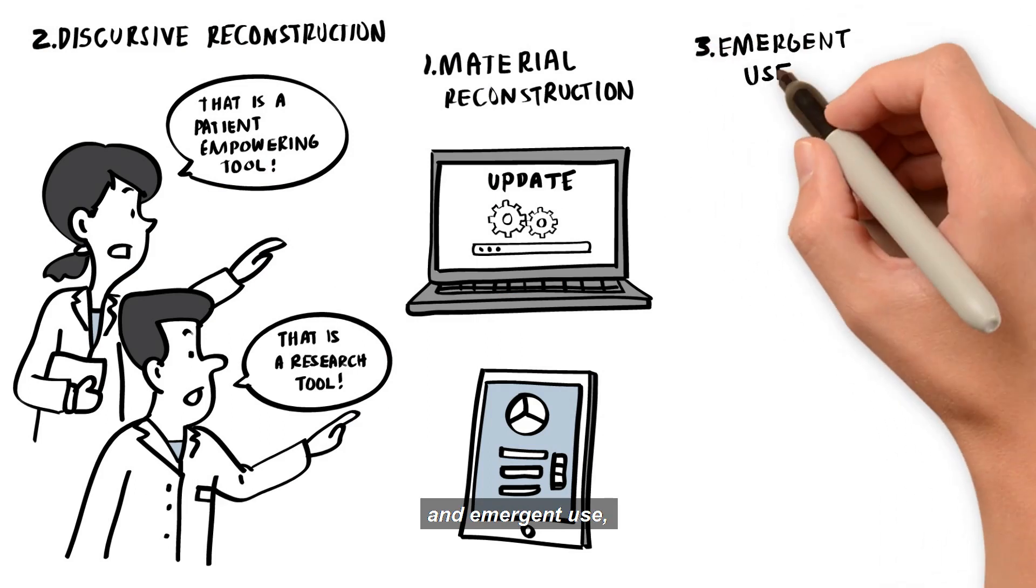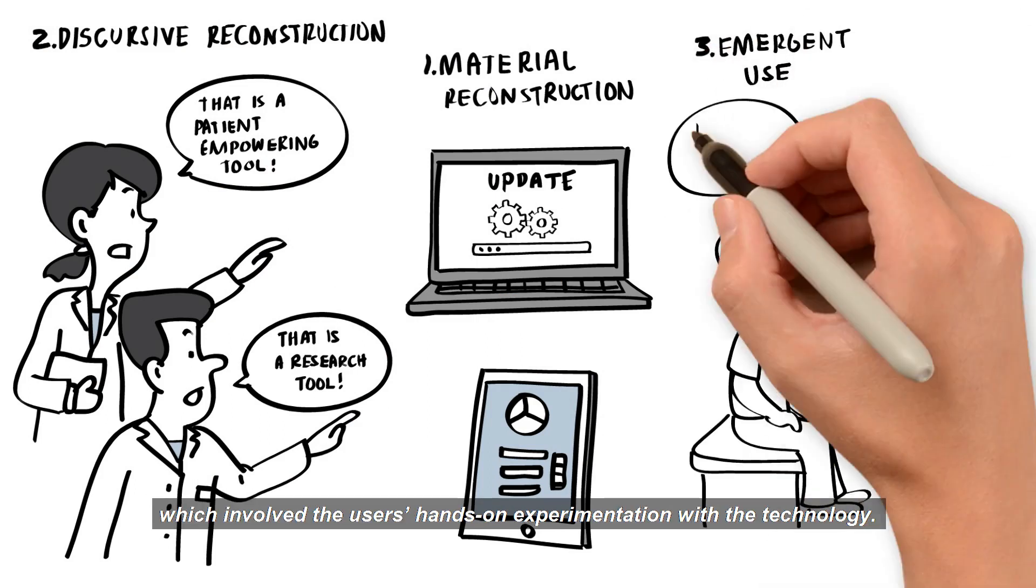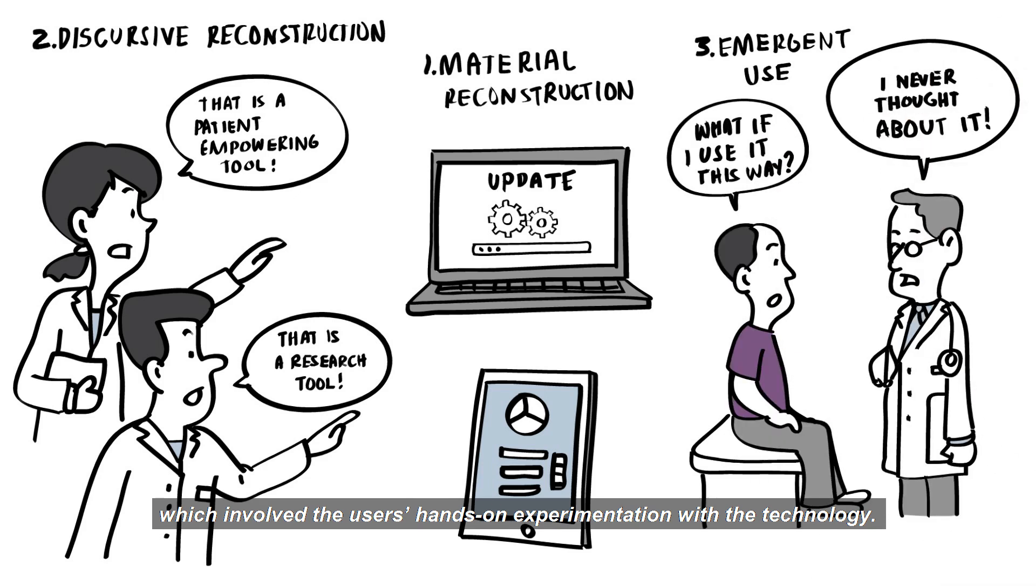And emergent use, which involved the user's hands-on experimentation with the technology. Together, these three practices led to institutional change at national scale.